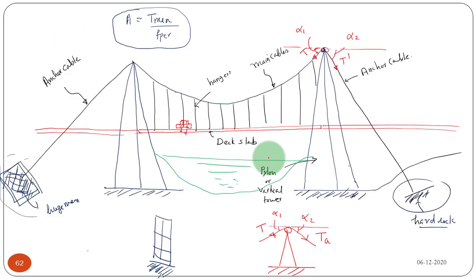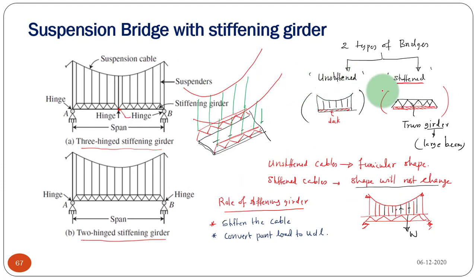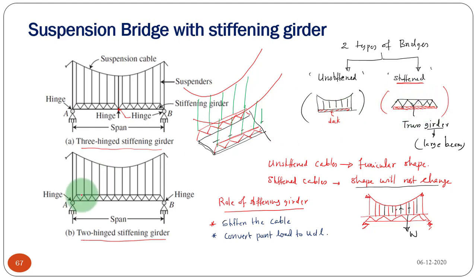That type of bridge is called a suspension bridge with stiffening girders. Basically, we have two types: unstiffened and stiffened bridges. An unstiffened bridge has a deck suspended from the main cable through suspenders. In a stiffened bridge, we add stiffening girders — most of the time truss-type structures called truss girders. For smaller bridges with lighter loads, we can provide an I-section beam instead of the truss structure. This is provided at the deck level, and the stiffening girders are connected to the main cable.